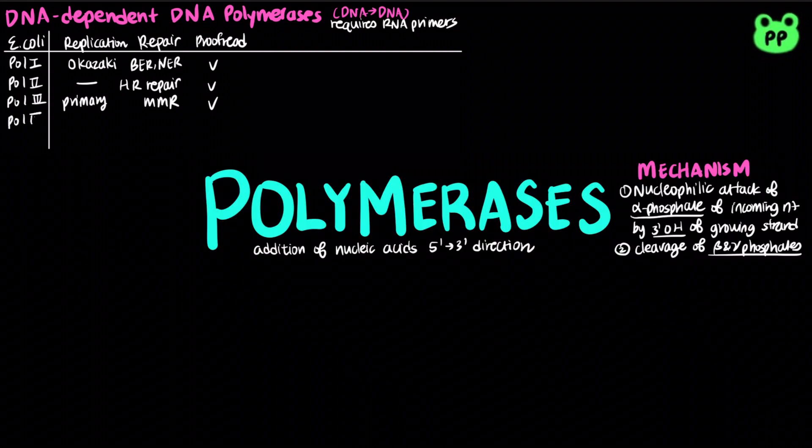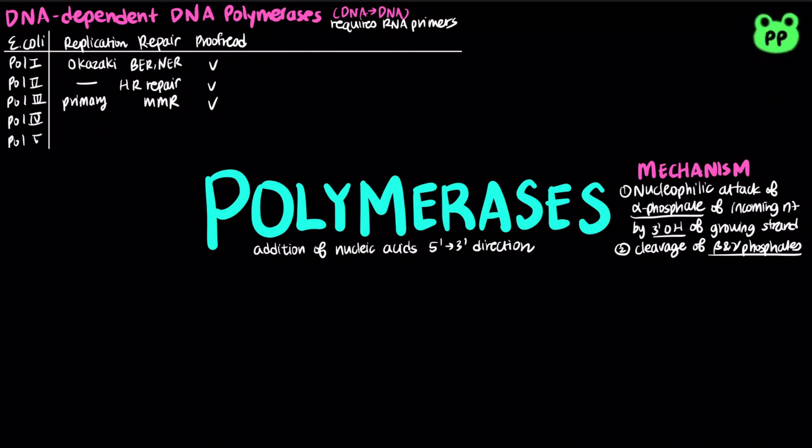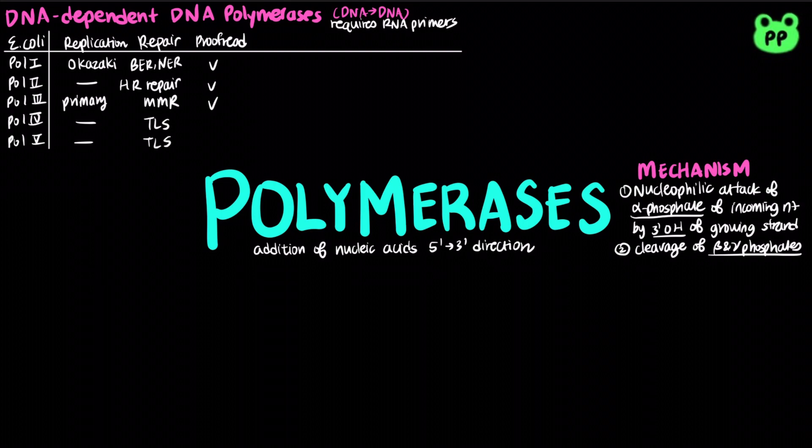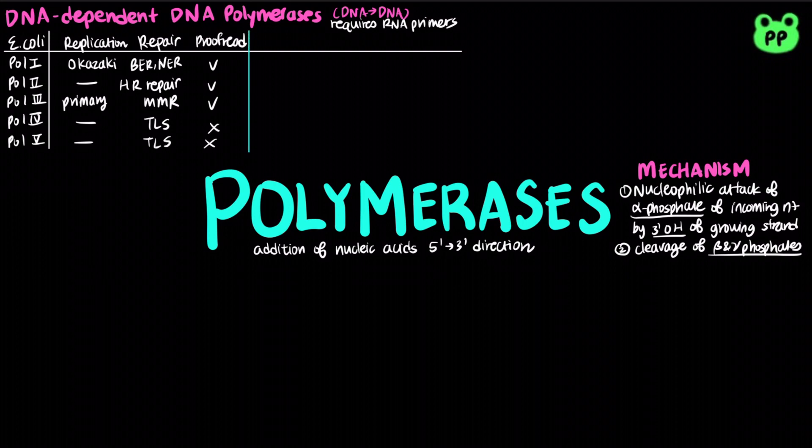DNA polymerases 4 and 5 both lack proofreading activities and function in error-prone translesion synthesis, which helps DNA polymerase 3 bypass DNA lesions during DNA replication. Eukaryotes have much more diverse DNA polymerases.